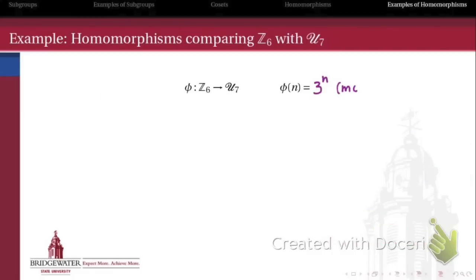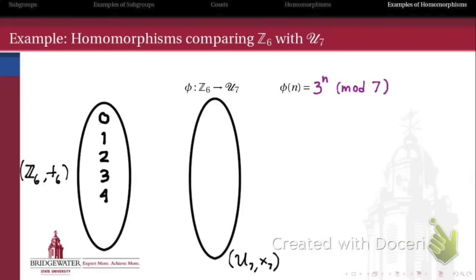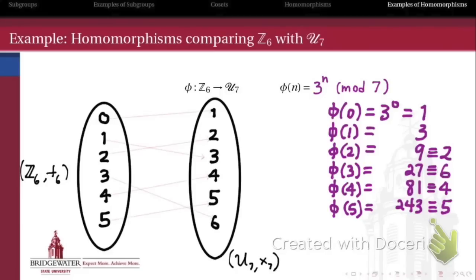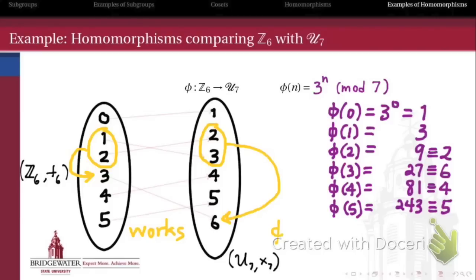We've got to try a little harder. Suppose we take 3 raised to the power n as our function from Z6 to U7. Drawing out where everything goes: φ(0) = 3^0 = 1, φ(1) = 3, φ(2) = 9 ≡ 2, φ(3) = 6, φ(4) = 4, φ(5) = 5. We can draw arrows to visualize this function. Is it a homomorphism? Let's take 1 and 2 again: they add to 3 in Z6. Meanwhile, 1 goes to 3 and 2 goes to 2, and multiplying 3 and 2 in U7 gives 6 — which is indeed the image of the sum 1+2. So φ(1+2) = φ(1)×φ(2). And in fact it works in general: φ(n+m) = φ(n)×φ(m). So this is a homomorphism from Z6 to U7.